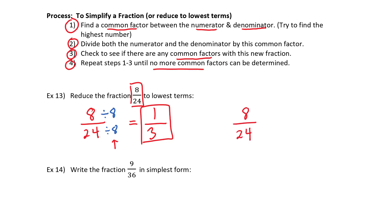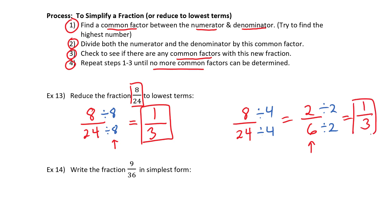Perhaps you didn't see the 8 right off the bat — maybe you saw a 4 instead. No big deal: divide the top and bottom by 4 to get 2 over 6. Then check for more common factors — you can take a 2 out of the top and bottom to get 1 third. Either way, you get 1 third. It doesn't matter how many steps it takes. Please take your time and when you think you've simplified to lowest terms, check again to see if there's a common factor.